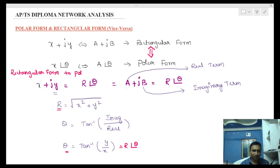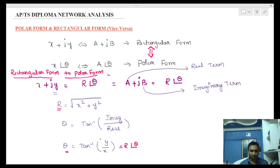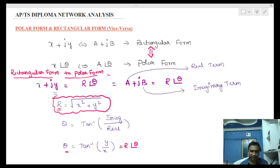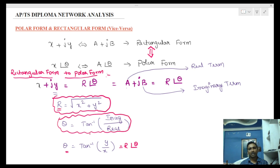So this is the conversion from rectangular form to polar form. The formula is: R equals square root of x-squared plus y-squared, and theta equals tan inverse of imaginary by real. These are the formulas we are going to learn.